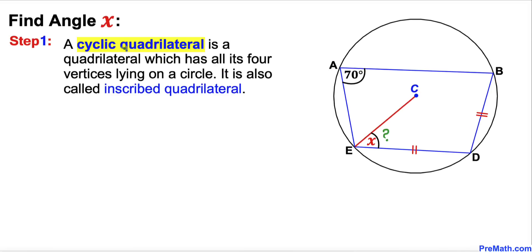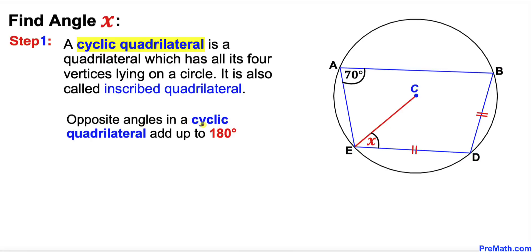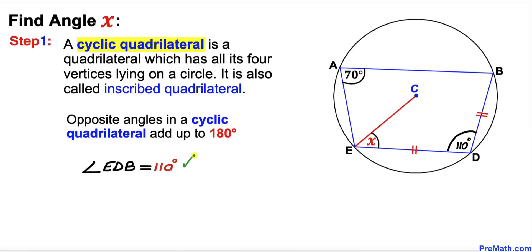A cyclic quadrilateral is a quadrilateral which has all four vertices lying on a circle. All vertices A, B, D, and E are on this circle. The opposite angles in a cyclic quadrilateral add up to 180 degrees. Since angle A is 70 degrees, the opposite angle EDB must be 110 degrees.